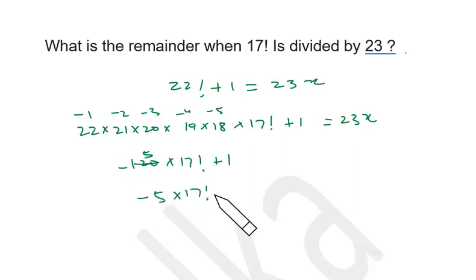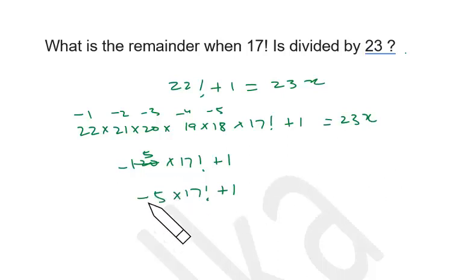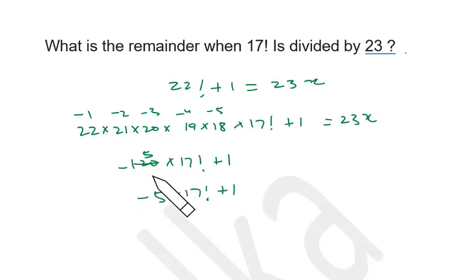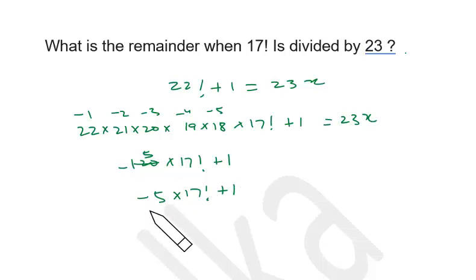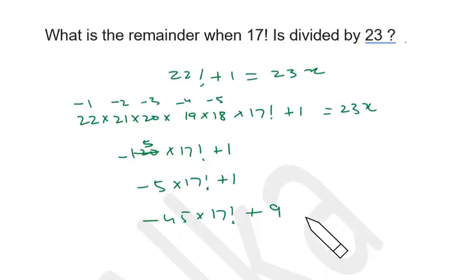So it's minus 5 into 17 factorial plus 1, which is also a multiple of 23. Now 2 times 23 is 46, and 5 times 9 is 45, which is 1 less than a multiple of 23. So I can multiply both sides by 9 — if this number is a multiple of 23, then 9 times it is definitely a multiple of 23. So it becomes minus 5 into 9, which is minus 45 into 17 factorial plus 9.